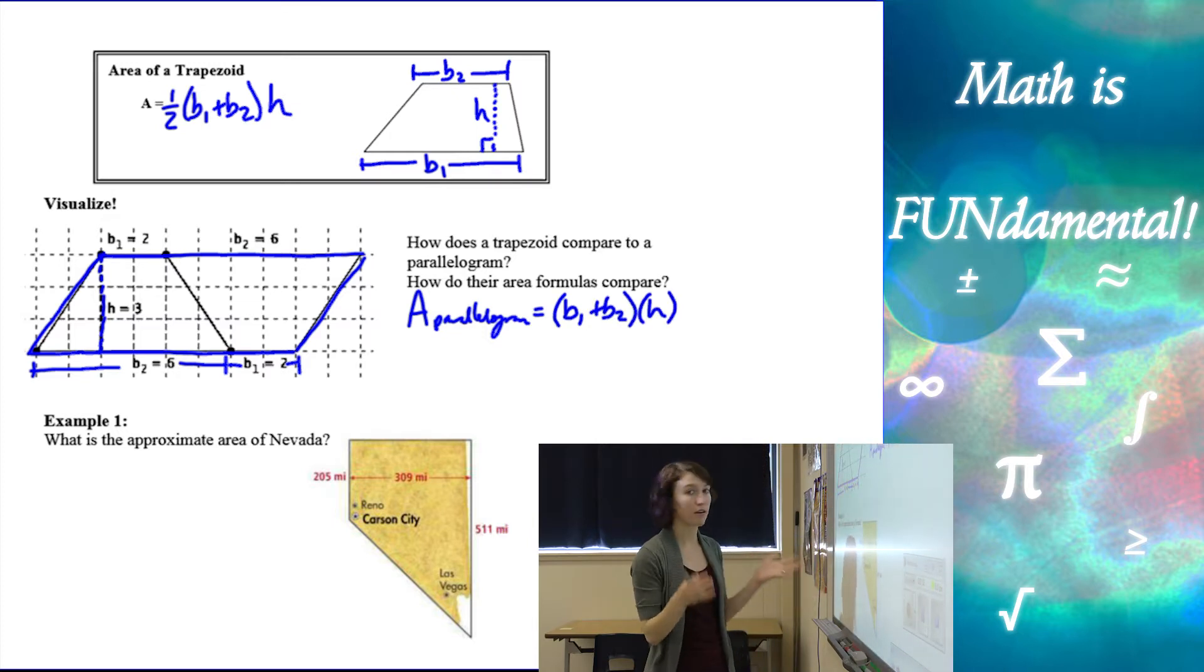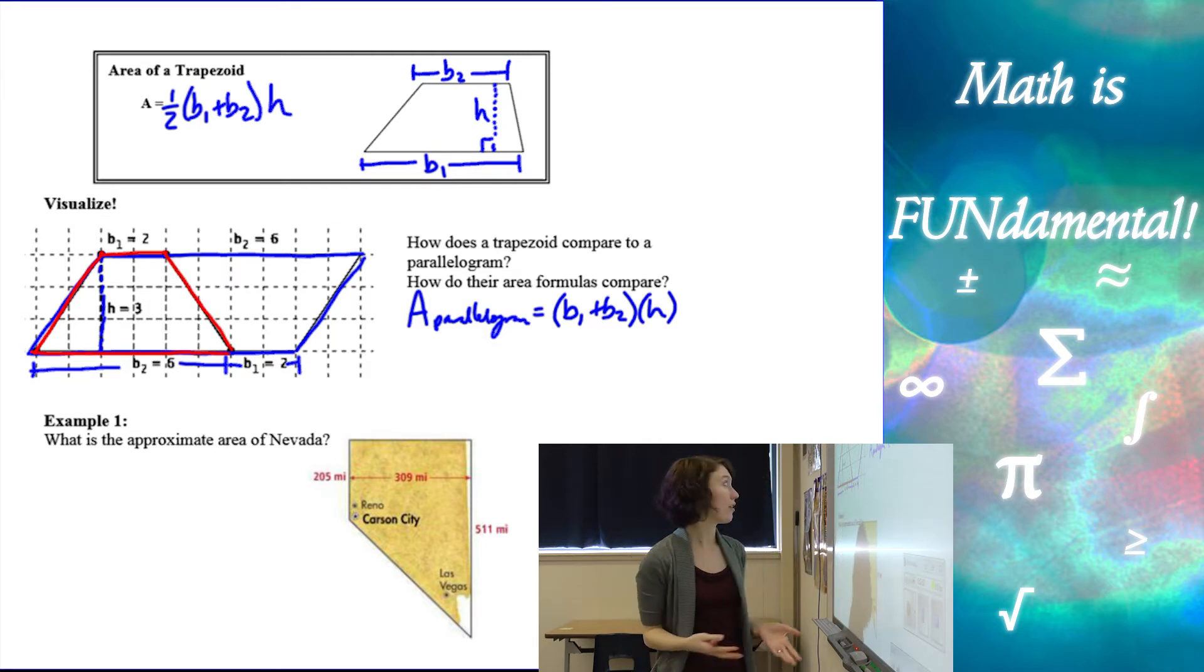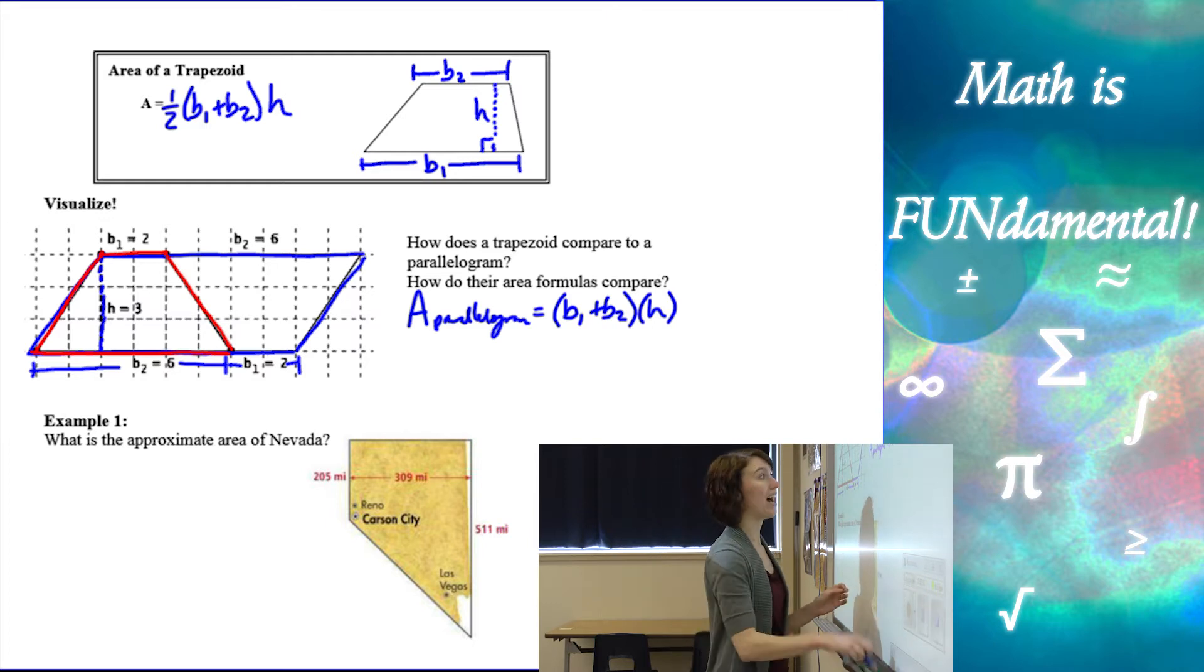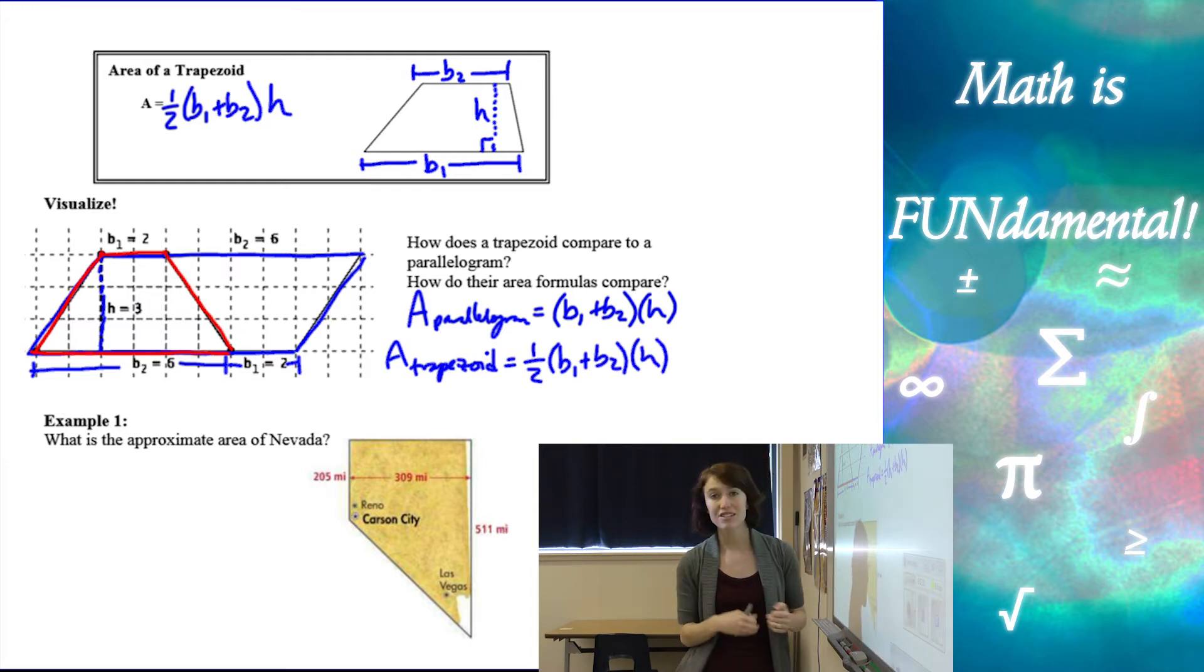Now if I want just the area of one of these trapezoids, we can think about this trapezoid as half of the parallelogram. If you look, it's actually this trapezoid just flipped upside down and stuck together. So the trapezoid is half of the area of the parallelogram, which we just found was base one plus base two times the height. So that's just another way to kind of think about your formulas.